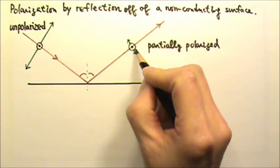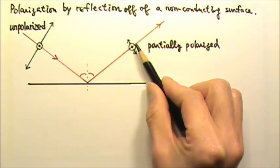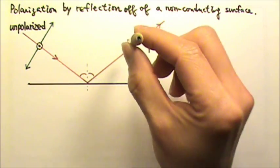It turns out that this in and out component gets reflected just fine, but the component that is parallel to the page can be much weaker in the reflected light. This means the reflected beam is partially polarized in the in and out of the page direction.